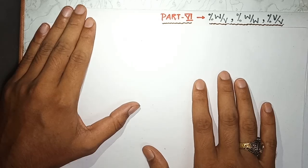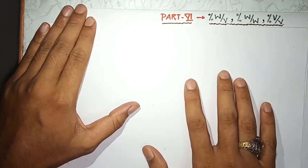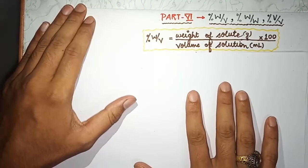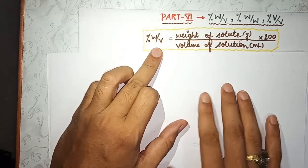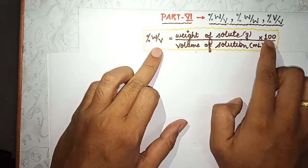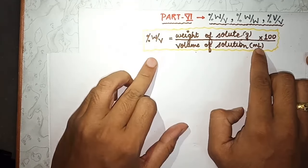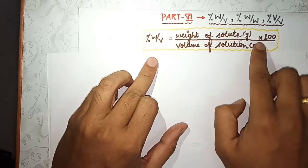In part 6 we will learn about percentage weight by volume, percentage weight by weight, and percentage volume by volume. Percentage weight by volume is given as weight of solute in gram multiplied by hundred, divided by volume of solution in ml.